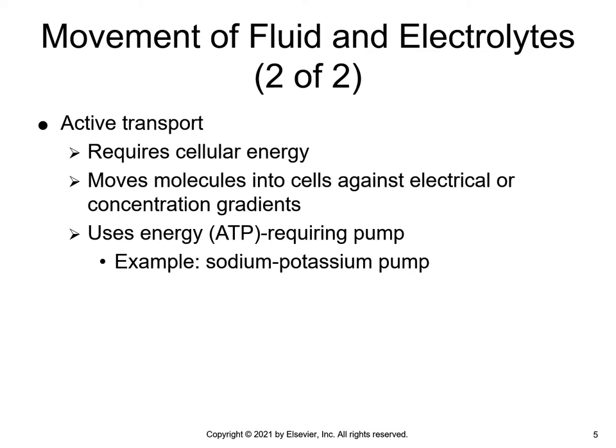Active transport requires cellular energy. This can move molecules into cells regardless of their electrical charge or the concentrations already present in the cell. Active transport may move substances from an area of lower concentration to an area of higher concentration. The energy source for the process is adenosine triphosphate, or ATP. Amino acids, glucose, iron, hydrogen, sodium, potassium, and calcium are moved through the cell membrane by active transport.